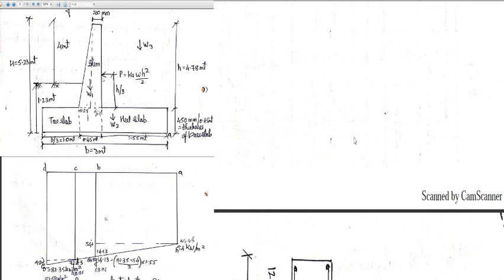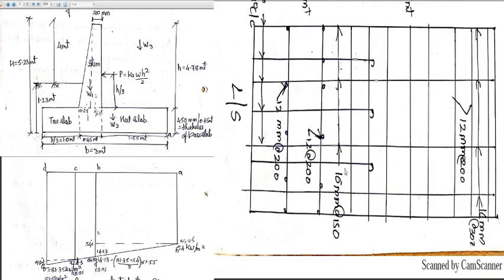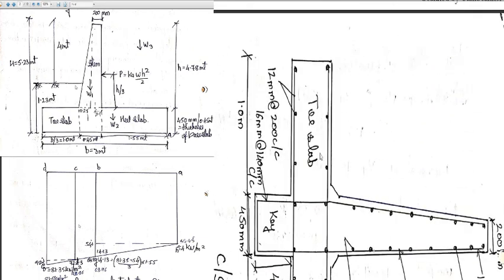To summarize the retaining wall design: the stem is 200 mm at the top tapering to 450 mm at the base; the heel slab is 1.55 m long and 0.45 m deep; the toe slab is 1.0 m long and 0.45 m deep. Reinforcement details and all checks are complete. The full reinforcement detailing will be covered in the next class.